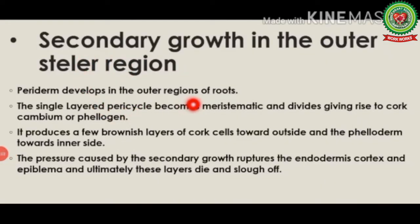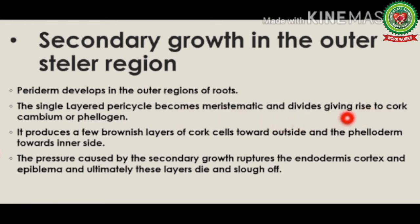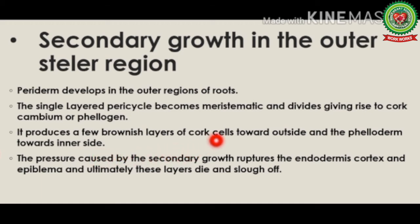Along with the formation of secondary xylem and secondary phloem in the inner stele region, there is formation of periderm in the outer regions of the root. The single-layered pericycle becomes meristematic and divides, giving rise to cork cambium or phellogen. It produces a few layers of cork cells towards the outside and phelloderm towards the inner side. The pressure caused by secondary growth ruptures the endodermis, cortex, and epiblema, and ultimately these layers die and slough off.